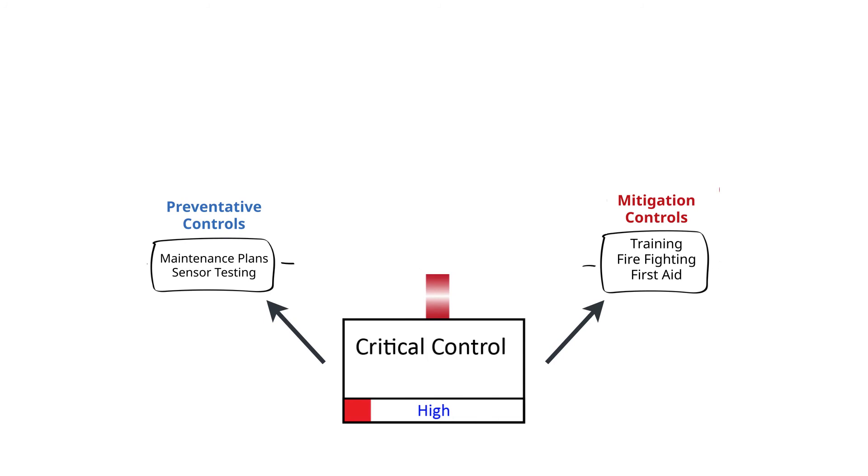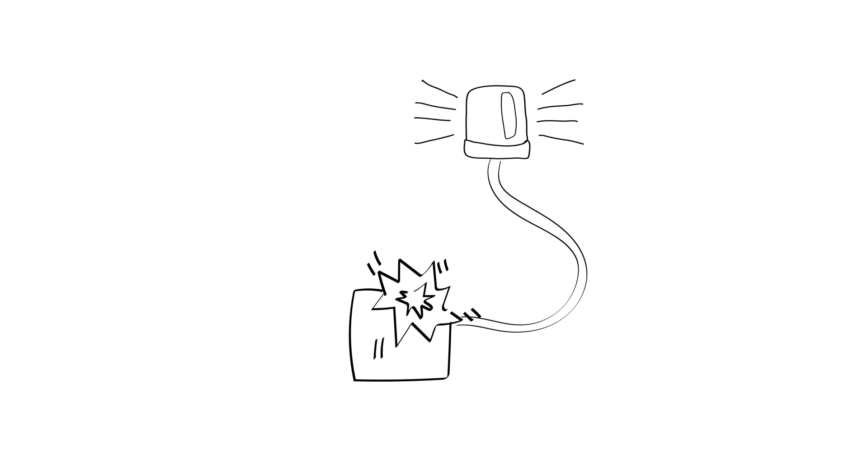Once we have determined our critical controls, we then determine how the control itself could degrade. For example, if the control was a spark sensor and its alarm, what might interfere with it working correctly? What if the sensor becomes dirty and won't read properly? What if some of the spark sensors are offline already?